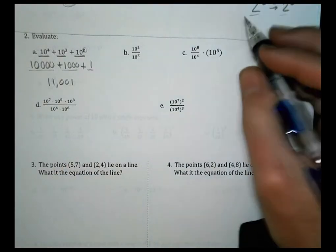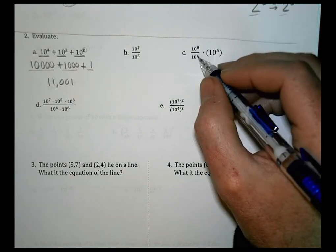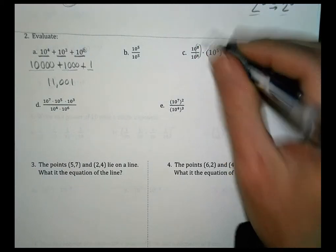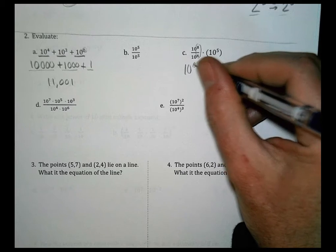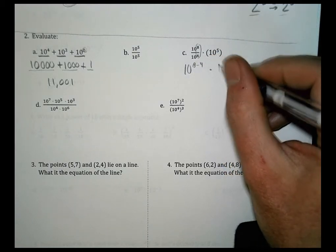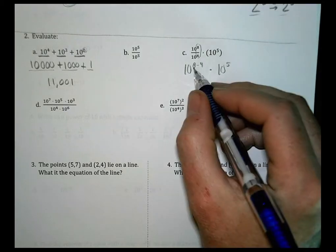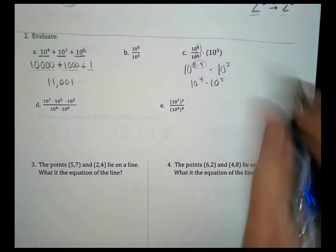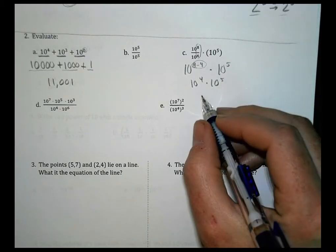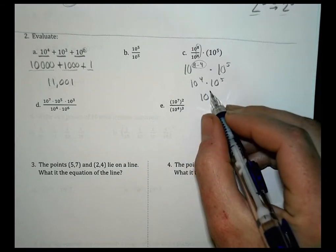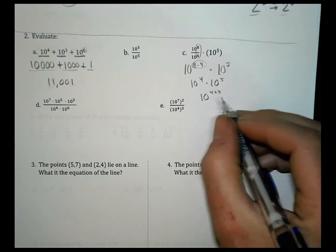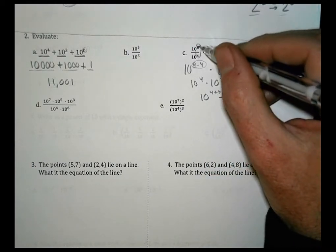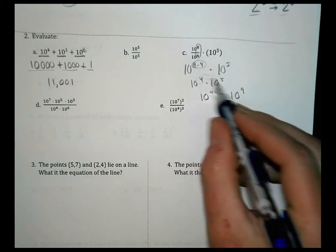For C, we have 10 to the 8th over 10 to the 4th, times 10 to the 5th. Let's do the division part first: that's 10 to the 8 minus 4 power, multiplied by 10 to the 5th. 8 minus 4 is 4, so that becomes 10 to the 4th times 10 to the 5th. When we multiply powers together, we add the exponents. This becomes 10 to the 4 plus 5 power, which is 10 to the 9th. So we subtracted when dividing and added when multiplying.